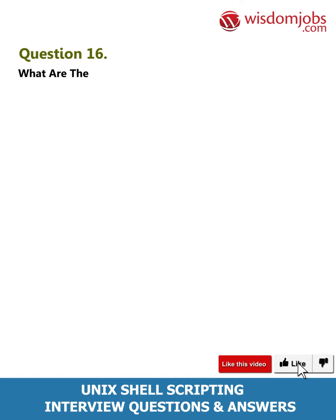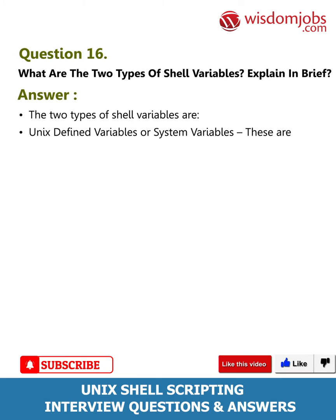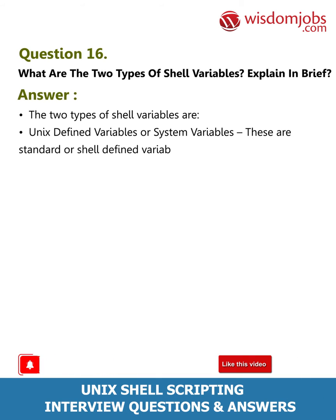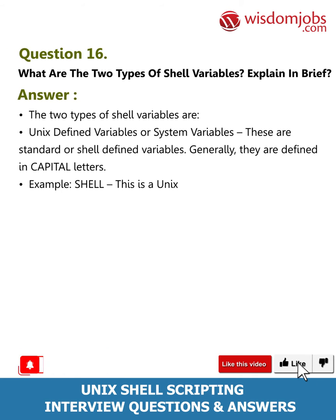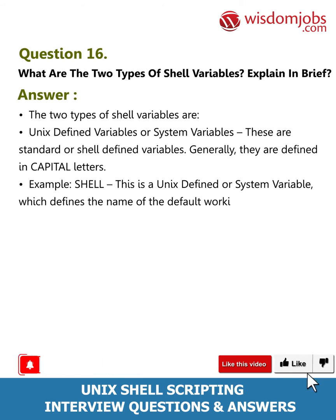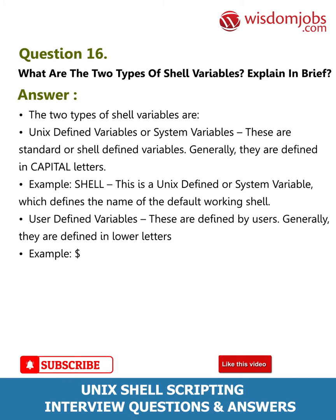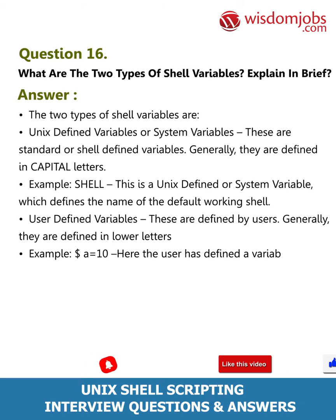Question 16: What are the two types of shell variables? Explain in brief. Answer: The two types of shell variables are: Unix-defined variables or system variables — these are standard or shell-defined variables, generally defined in capital letters. Example: SHELL — a Unix-defined variable which defines the name of the default working shell. User-defined variables — these are defined by users, generally in lowercase letters. Example: a=10, where the user has defined a variable called 'a' and assigned value 10.